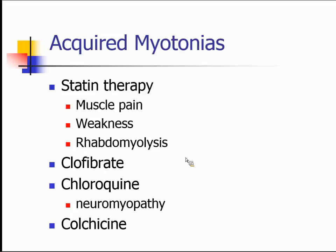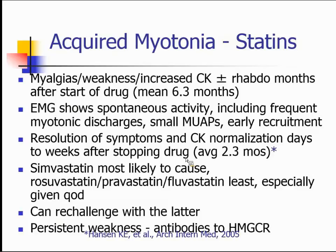Statin therapy deserves special attention. These patients often develop muscle pain, weakness, and increased CK shortly after starting the drug — usually within about six months on average — and the EMG can look a lot like a myotonic myopathy with frequent myotonic discharges in many muscles. Over time, if they're taken off statin therapy, everything usually gets better within a couple of months. Simvastatin is the most likely to cause muscle toxicity, usually at doses of 80 mg or above; rosuvastatin, pravastatin, and fluvastatin are the least toxic, especially when given every other day rather than daily. Patients can be re-challenged with one of those latter three drugs after recovery from myotoxicity with simvastatin.